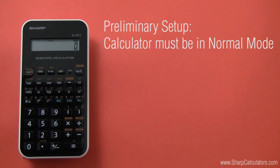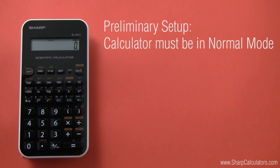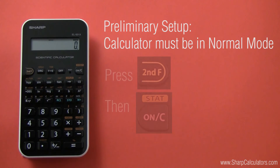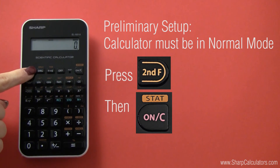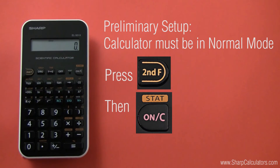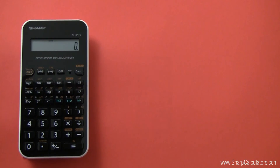To calculate roots, your calculator needs to be in normal mode. To put your calculator into normal mode, press 2nd F, then On.